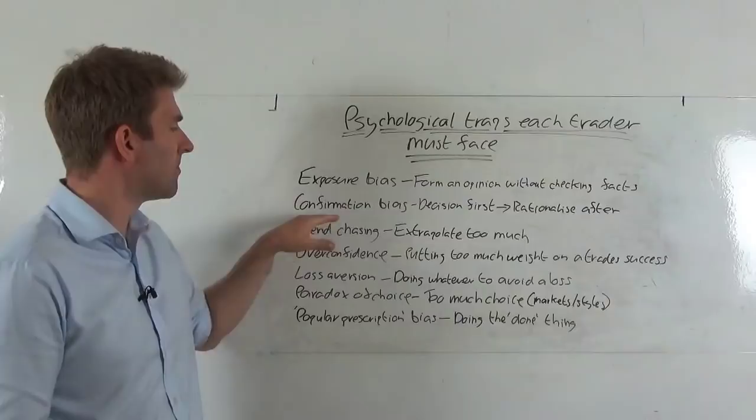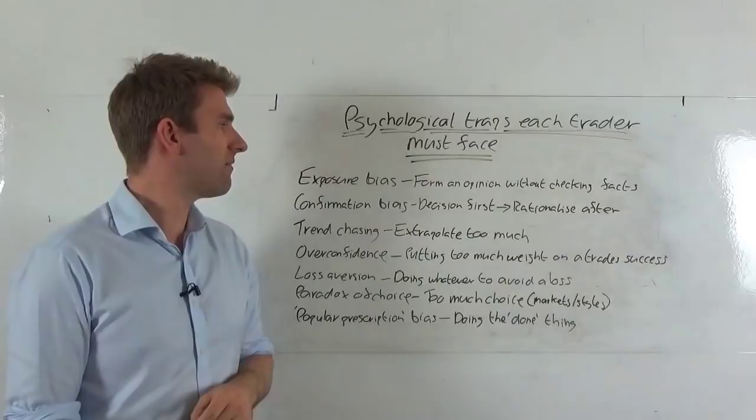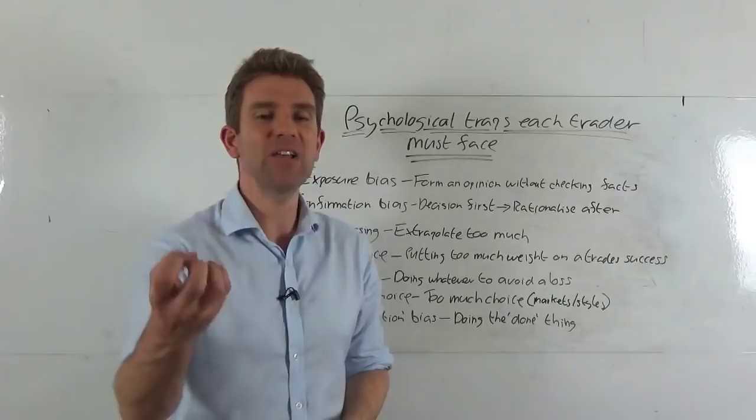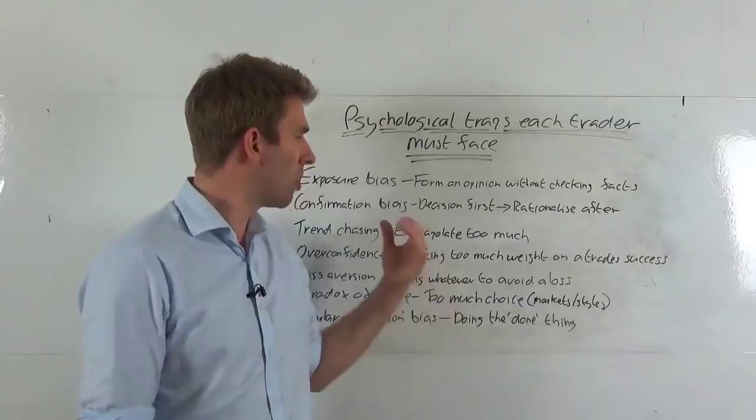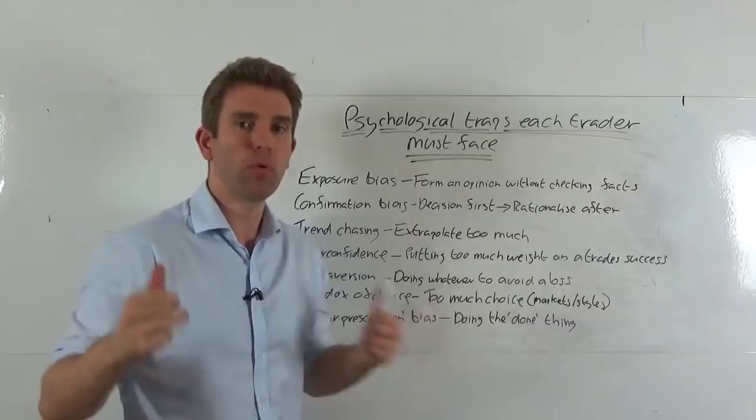All right, number two, confirmation bias. That's when you make a decision first and you rationalize it after. So you're basically looking at something, you make a decision, and then you look for things to kind of back up that decision, to rationalize your decision. As opposed to looking at it, rationalizing, coming up with a neutral decision based on what you see. Confirmation bias is that snap decision, and then finding things that back up and support the decision you've made. The wrong way around.